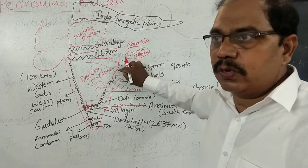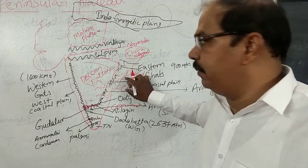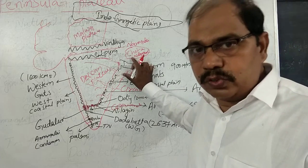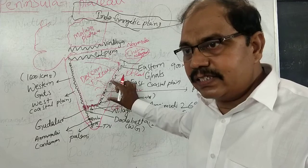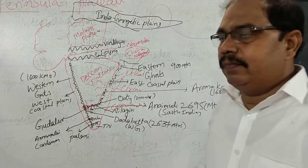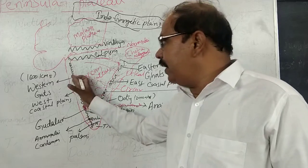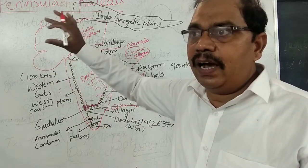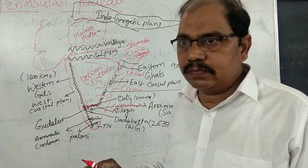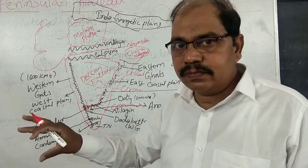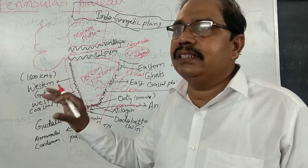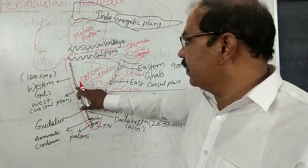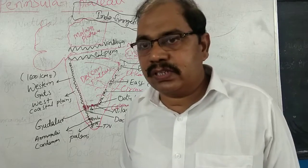Both coastal plains have regional names. The eastern coastal plain is called the Utkal coast in Odisha, the Sarkar coast in Andhra Pradesh, and the Coromandel coast in Tamil Nadu. The western coastal plain is called the Konkan coast in Maharashtra and Goa, the Kanara coast in Karnataka, and the Malabar coast in Kerala.